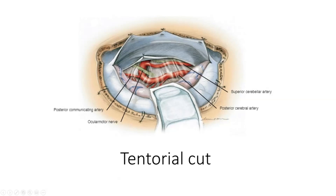You can see the edge of the tentorium is tucked lateral to the floor of the middle cranial fossa with an interrupted suture. The stitch of the tentorium is placed anterior to the trochlear nerve, which you need to identify properly because it runs just alongside the tentorium. You can see the trochlear nerve and the tentorium — the suture is anterior to the trochlear — and the oculomotor nerve is used as a landmark for orientation. On the right side, the oculomotor nerve is anterior to the trochlear nerve.